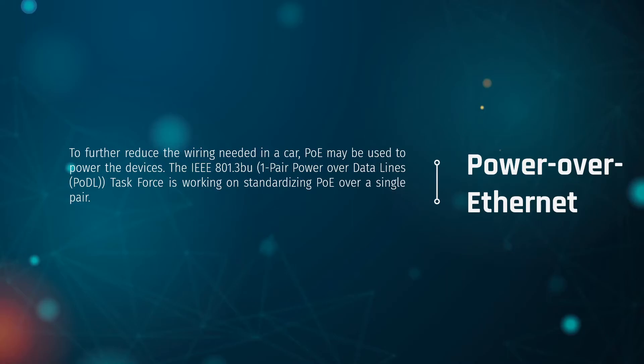Power Over Ethernet is used to further reduce the wiring needed, since you can actually power end devices as well as send data over the same wire at the same time — without the need for extra wiring to power the device.